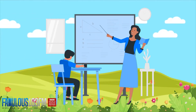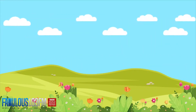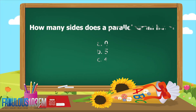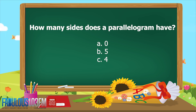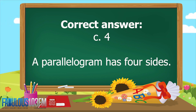Good afternoon kids, we're back again today with our midweek kids quiz. Let's see how well you did with yesterday's quiz questions. The first question was: how many sides does a parallelogram have? Is it A: zero sides, B: five sides, or C: four sides? The correct answer is C — four. A parallelogram has four sides.